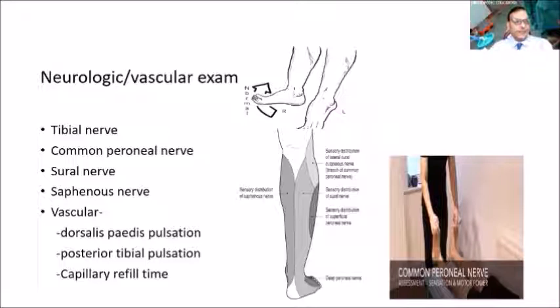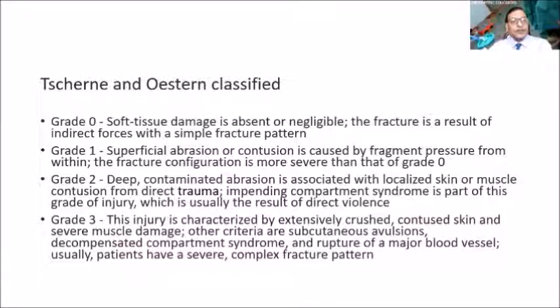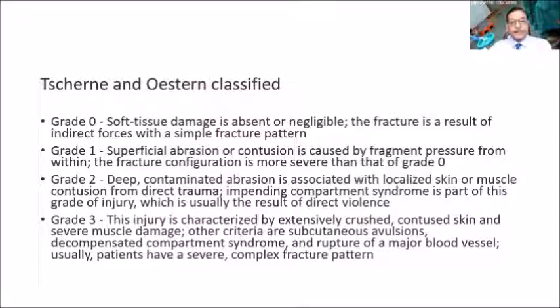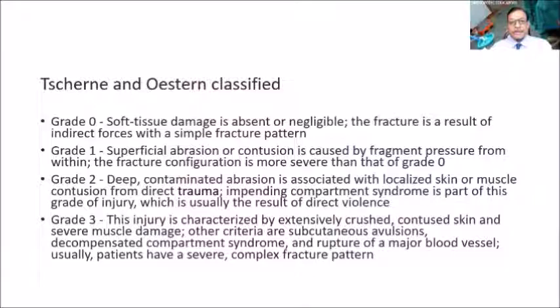Neurological examination covers the tibial nerve, common peroneal nerve, and saphenous nerve. Vascular examination includes dorsalis pedis pulsation, posterior tibial pulsation, and capillary filling time. The Tscherne classification grades soft tissue damage: Grade 0 is minimal or absent soft tissue damage; Grade 1 is superficial abrasion or contusion with a slightly more severe fracture configuration; Grade 2 is deep contaminated abrasion with localized skin or muscle contusion from direct trauma and impending compartment syndrome; Grade 3 is extensively crushed and contused skin with severe muscle damage, clinically apparent compartment syndrome, and possible rupture of a major blood vessel.